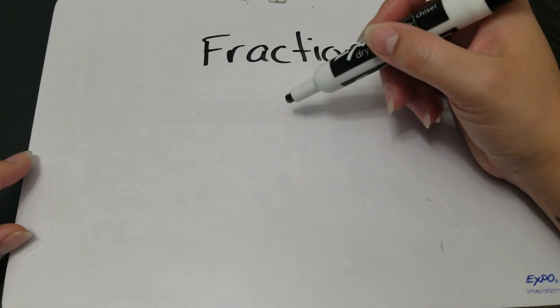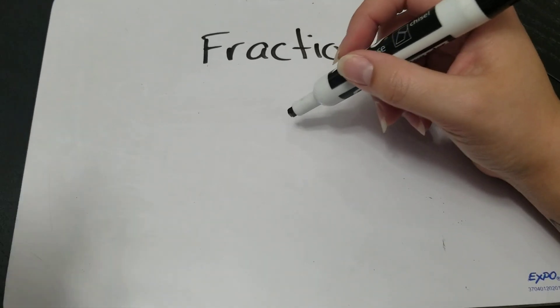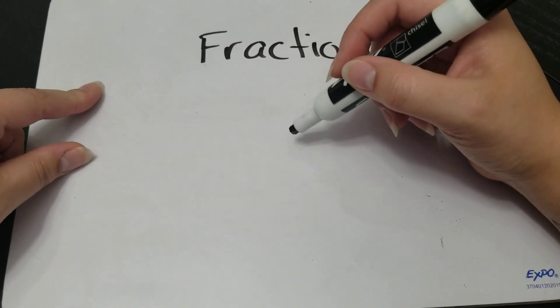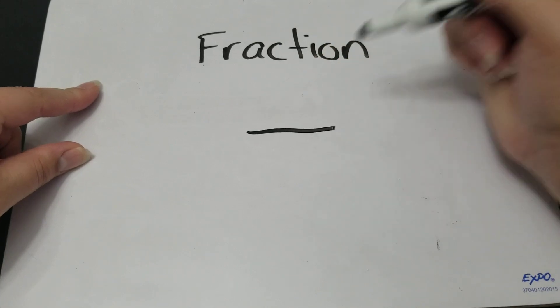A fraction has two parts. It has a numerator which is the number on the top and then a denominator which is the number on the bottom, both of which are separated by this magic little line here.